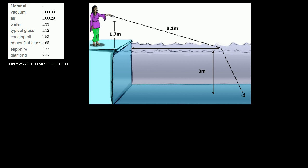Let's do a slightly more involved Snell's Law example. There's a person sitting at the edge of a pool with a laser pointer in their hand, shining it 1.7 meters above the surface of the pool. It travels 8.1 meters to touch the surface of the water. The light gets refracted inward going to a slower medium, then hits the bottom of the pool. The pool is 3 meters deep. What we want to figure out is how far away does this point hit — what is this total distance?